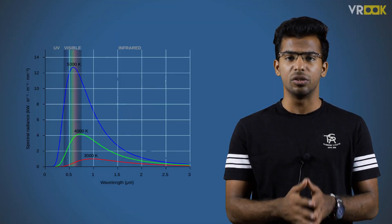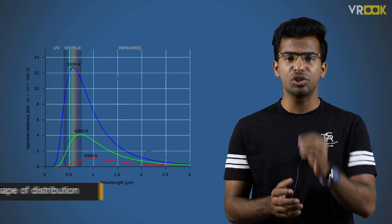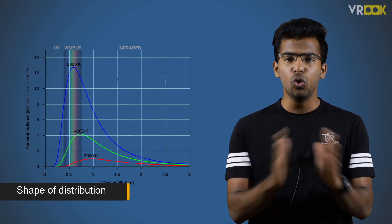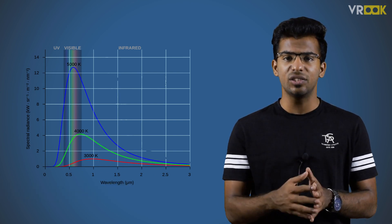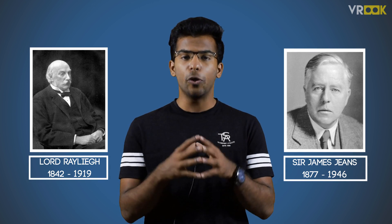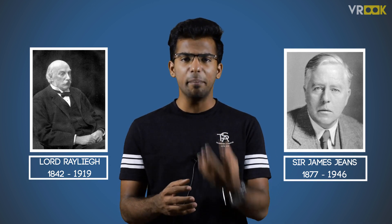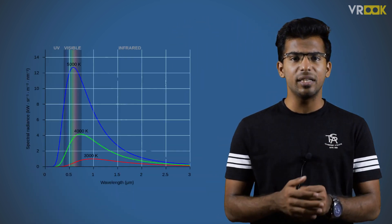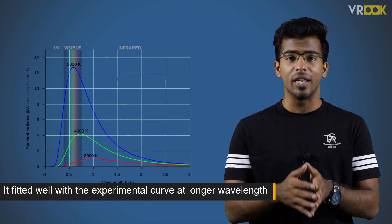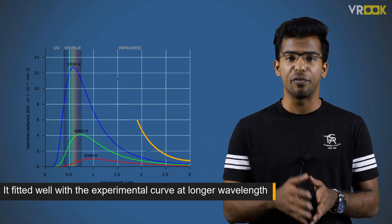Practical experimentation on black bodies gave the shape of the distribution, but there was no explanation for why the black body emits energy in this way. Two English scientists, Lord Rayleigh and Sir Jeans, were studying these radiations to explain the energy emitted from a black body at different wavelengths. This result is known as Rayleigh-Jean's law, which fitted the experimental curve at longer wavelengths but failed at shorter wavelengths.